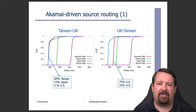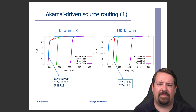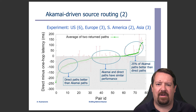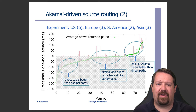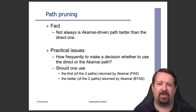In the results, on the Taiwan to UK path, the Akamai recommended path was the same as the best path over 90% of the time. However, in the reverse direction, the Akamai recommended path was not the best path 90% of the time — though it was still significantly better than the BGP direct path. Looking across a number of pairwise sources and destinations, the Akamai recommended path was often comparable to the direct path, and a significant amount of the time the direct path was better. Only 25% of the time was the Akamai recommended path better than the direct path, leading to the need to be selective about when to use the Akamai path.